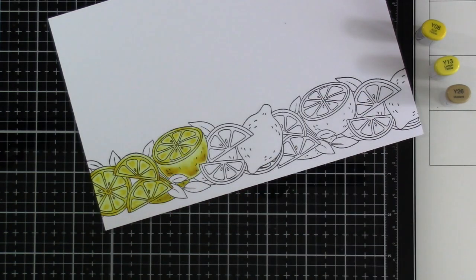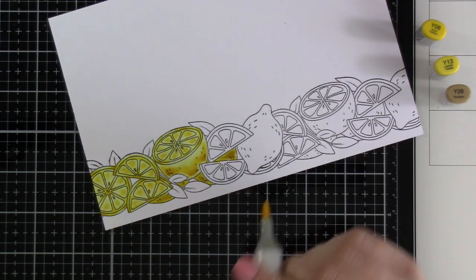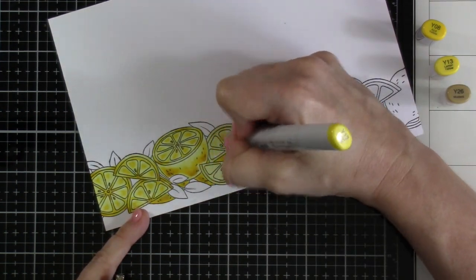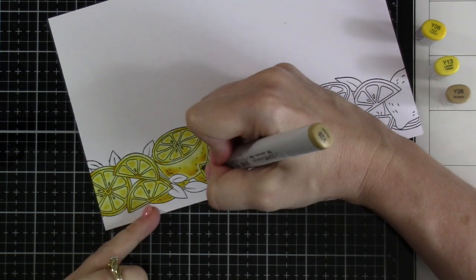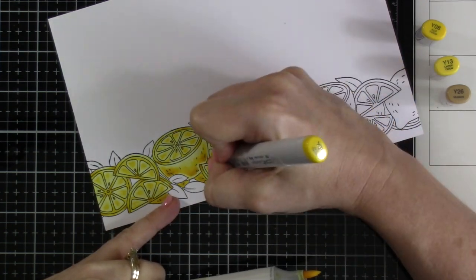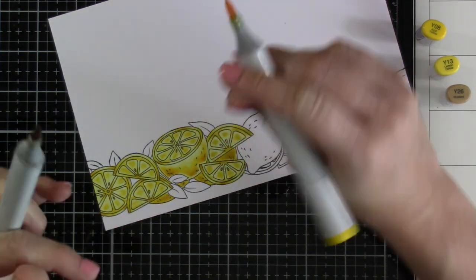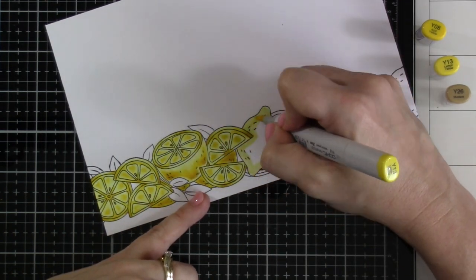All right, so now I'm speeding this up about four times just so that you can see what it looks like to color some of the rest of those lemons. I'm only using the second and third shades on my lemons that are in the very back, but then we go back to using all three colors on the ones that are in the forefront. And then I end up just loving this one lemon, this last lemon that I'm going to show you, just because that shading is everything.